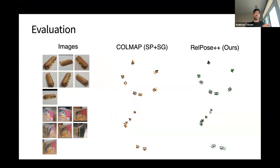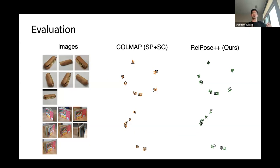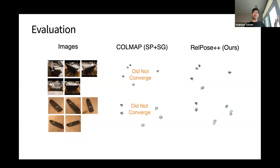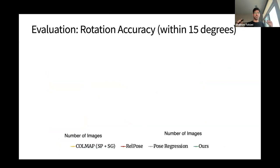Taking these seven images and running our system gives pretty accurate poses, not too far off from what COLMAP can give on these images. COLMAP gives accurate poses when it works, but unfortunately doesn't work in most cases with sparse images. Those were just two cherry-picked successes for COLMAP. More often than not, given just a small number of images, COLMAP fails to converge, whereas our method pretty robustly gives relatively accurate poses, often within 10–15 degrees, for lots of generic objects.